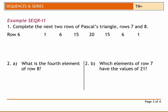So in an example here, complete the next two rows of Pascal's Triangle rows 7 and 8. We're given row 6. We start with a 1. 6 plus 1 is 7, 6 plus 15 is 21, 15 plus 20 is 35. And then we start repeating ourselves in the reverse order.